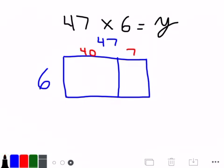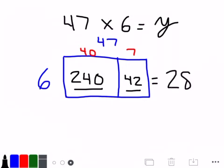Then we simply solve it, 6 times 40, 240, 6 times 7, 42. We add up our two partial products here, 240 and 42. And we can figure out that 47 times 6 equals 282. Right, pretty simple.